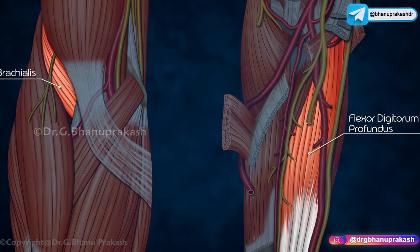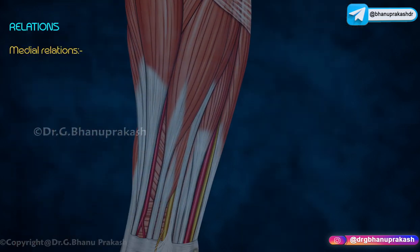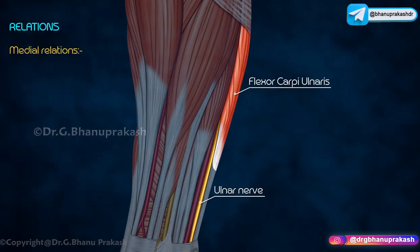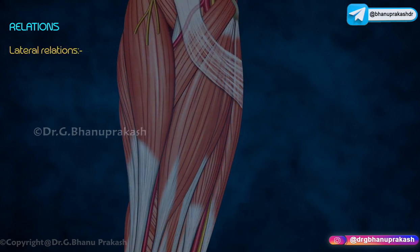Posterior relations: initially the ulnar artery lies on the brachialis, and later it lies on the flexor digitorum profundus. Medially it is related to the ulnar nerve and flexor carpi ulnaris. Laterally it is related to the flexor digitorum superficialis.